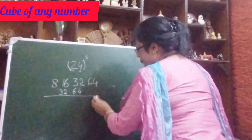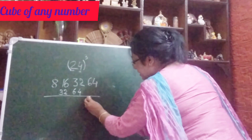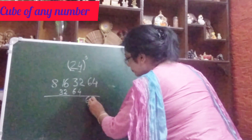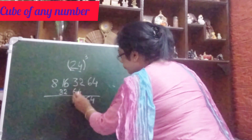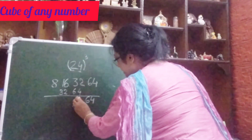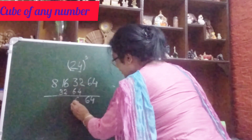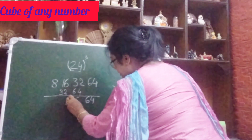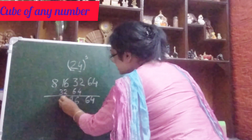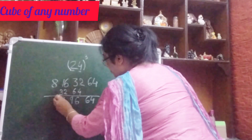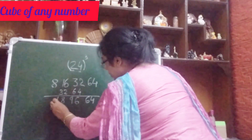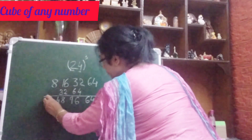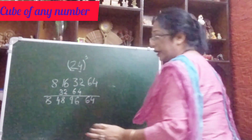Now you add. Here only 64 is there, so write down 64. Then 4+5+6 = that is 96, 6+7+8 and 3+1=4, that is 48 and 4.